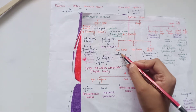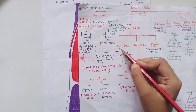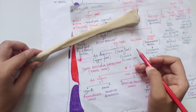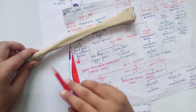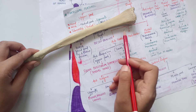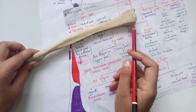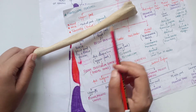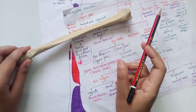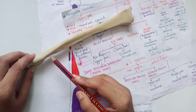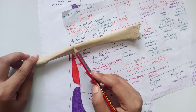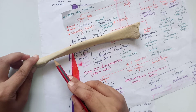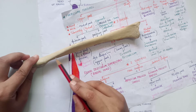The shaft has three borders and three surfaces. The anterior border extends from the radial tuberosity up to the styloid process. The medial border extends from the radial tuberosity up to the ulnar notch. The posterior border is mirror-like to the anterior border. On the anterior border, it has the anterior oblique line, where the flexor digitorum superficialis has its origin.